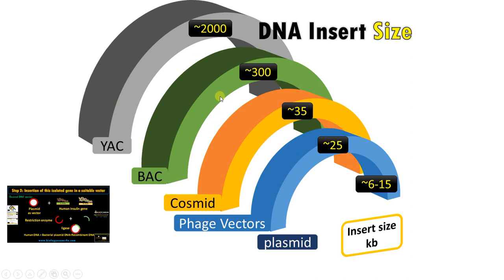Take the case of the human genome project — our genomes are very massive, so we need vectors with large insert sizes to accommodate these DNA fragments for cloning. That's why we use YAC and BAC for the human genome project. YAC was later replaced with BAC (bacterial artificial chromosome) because of stability issues. We have given a detailed video on different types of vectors; the link is in the description.